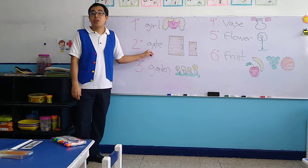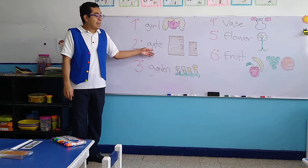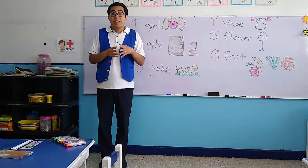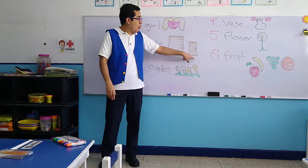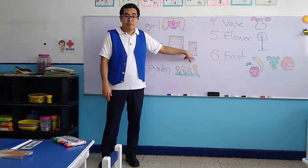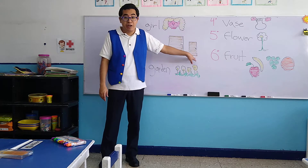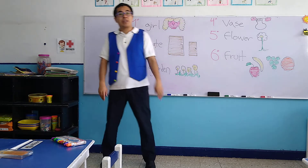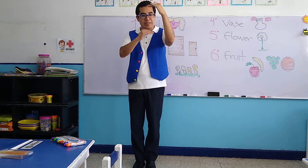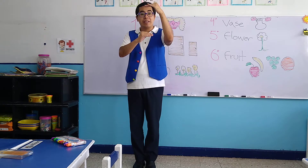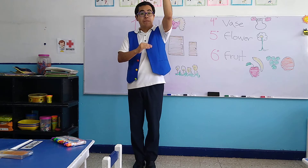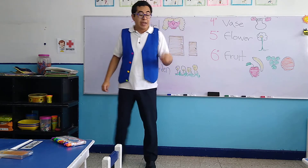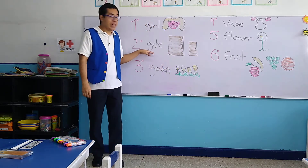Let's continue with the second word that says 'gate.' Now, gate is similar to a door — we have an example of a door here — but it's bigger. If a door is like this size, the gate is bigger. So it's basically a big door. That's a gate.